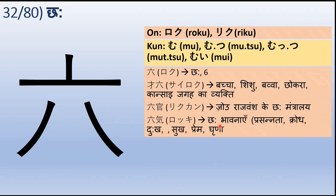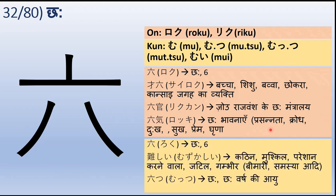Rokki ka arth hai chhe bhavnaayein — yaani prasannata, krodh, dukh, sukh, prem, aur ghrina. Roku yaani chhe, kunyomi mein bhi wahi meaning hai. Uske baad hai muzukashi — muzukashi ka arth hai kathin, mushkil, pareshan karne wala, jatil, gambhir yaani gambhir bimari ya koi gambhir samasya aadi.